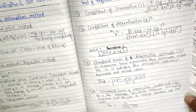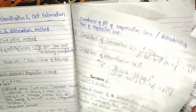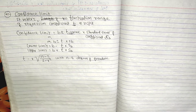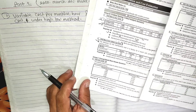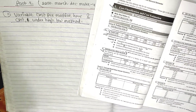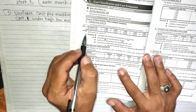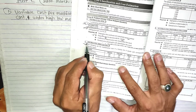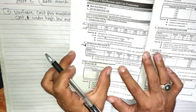This is the least square method and the regression equation. This is the formula to calculate the regression equation, followed by a numerical problem. This is Part 1 of the video — see the link in the description.